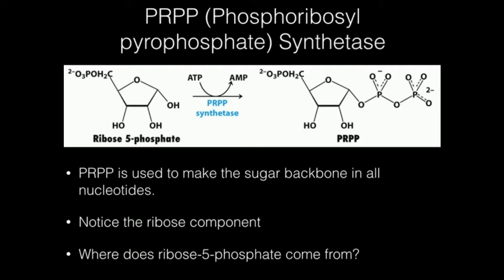Welcome back to nucleotide metabolism. In this video, we're going to go over the main precursor to all nucleotides that we're going to make, and that is the synthesis of this molecule shown over here on the right, which is called PRPP. PRPP stands for phosphoribosyl pyrophosphate.